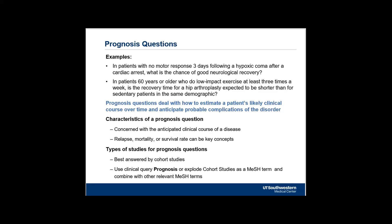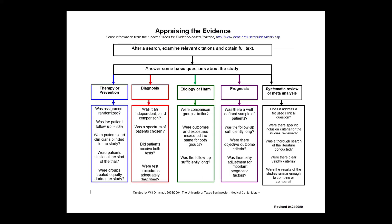The second page of the flowchart has some information about appraising the evidence for the articles and literature you find for different types of clinical questions. These are just good things to ask yourself or glance over when looking at an abstract or skimming a paper, so that you know it is a quality study no matter where it falls in the hierarchy.